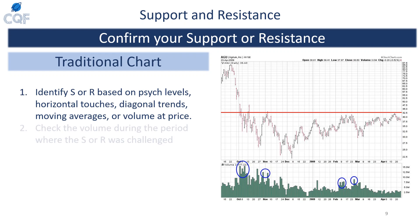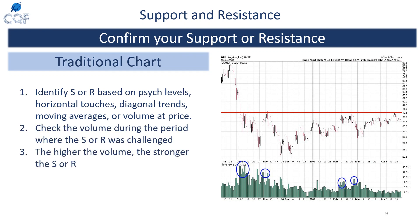It's important to confirm your support and resistance using multiple methods — ideally a psych level, a horizontal line, and a moving average all confirming the same price. Then take it a step further: when price challenges your support or resistance level, look at volume. If volume spiked at that level, it tells you other traders are respecting that price. If volume is low at your lines, no one else is really paying attention to it and it might not hold in the future.